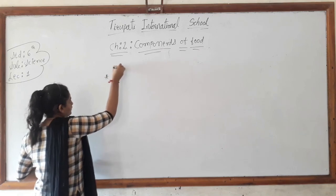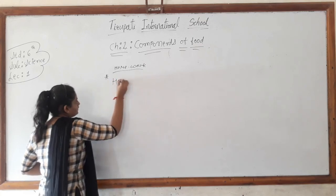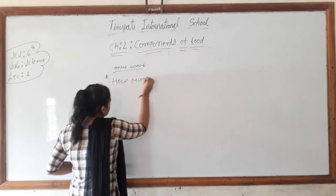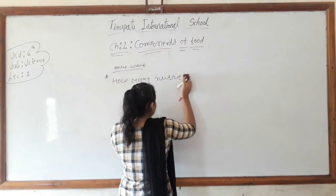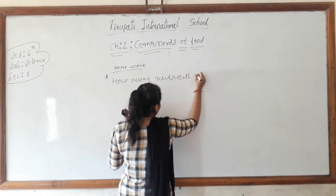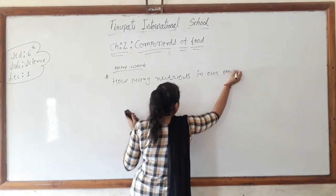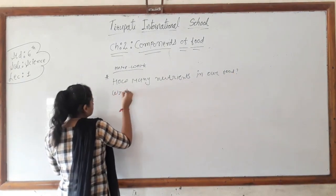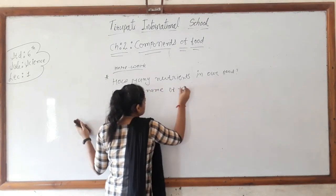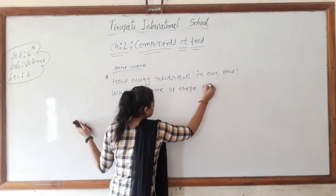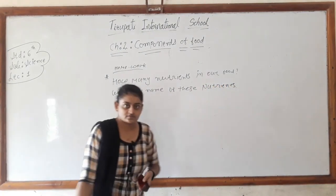In this lecture, we described different types of components — the nutrients. For homework, you have to write down how many nutrients are in our food and write the names of these nutrients. Thank you, students.